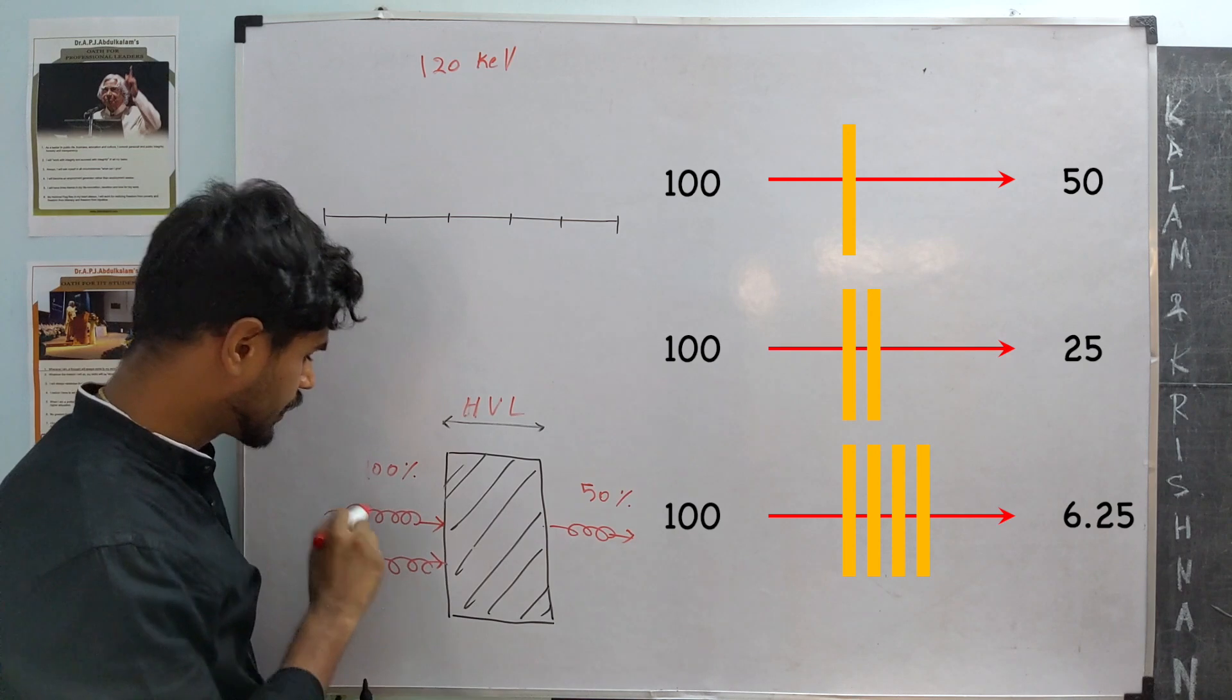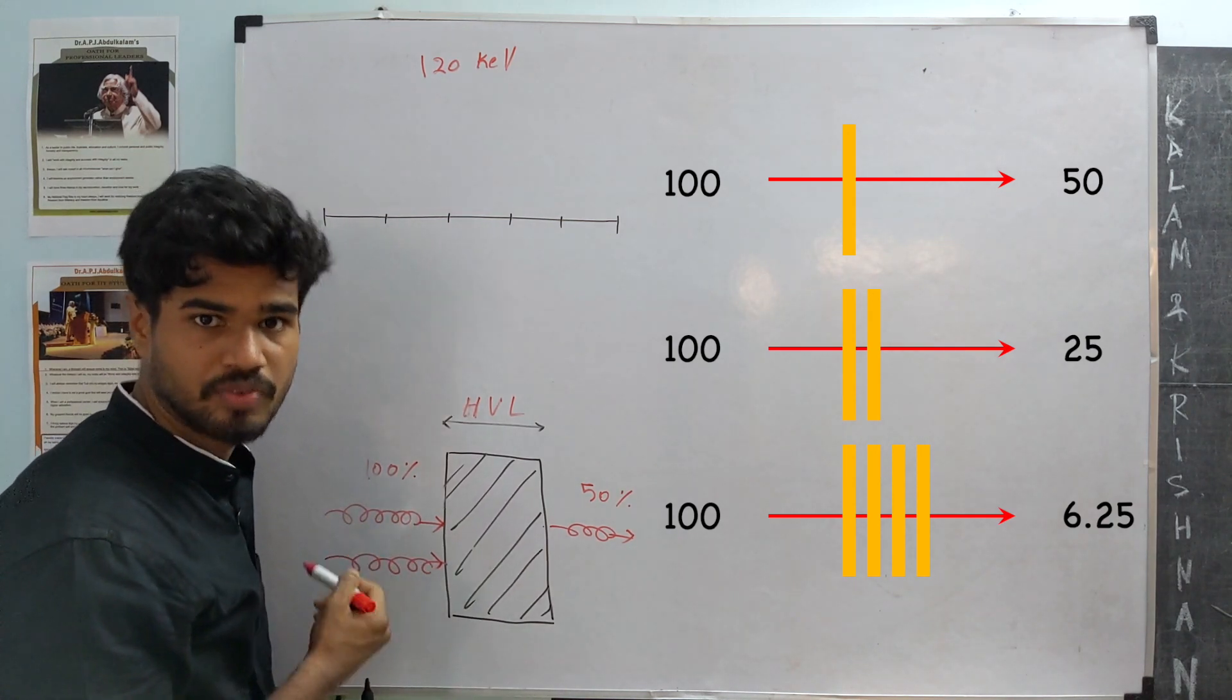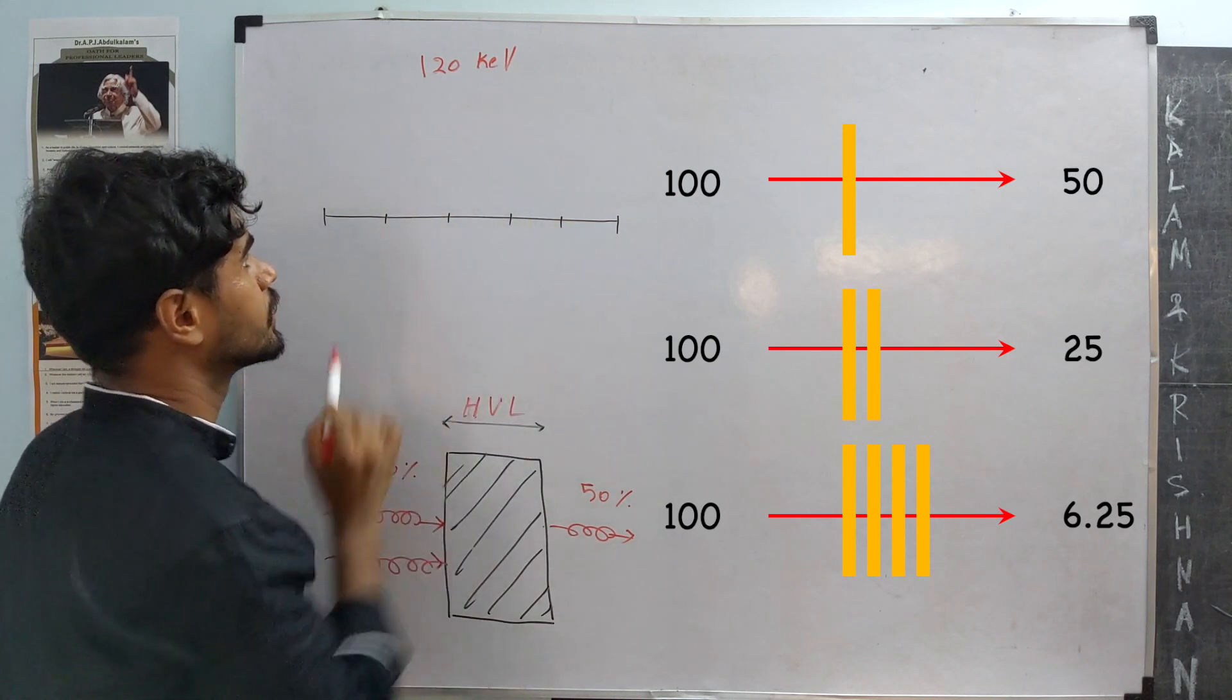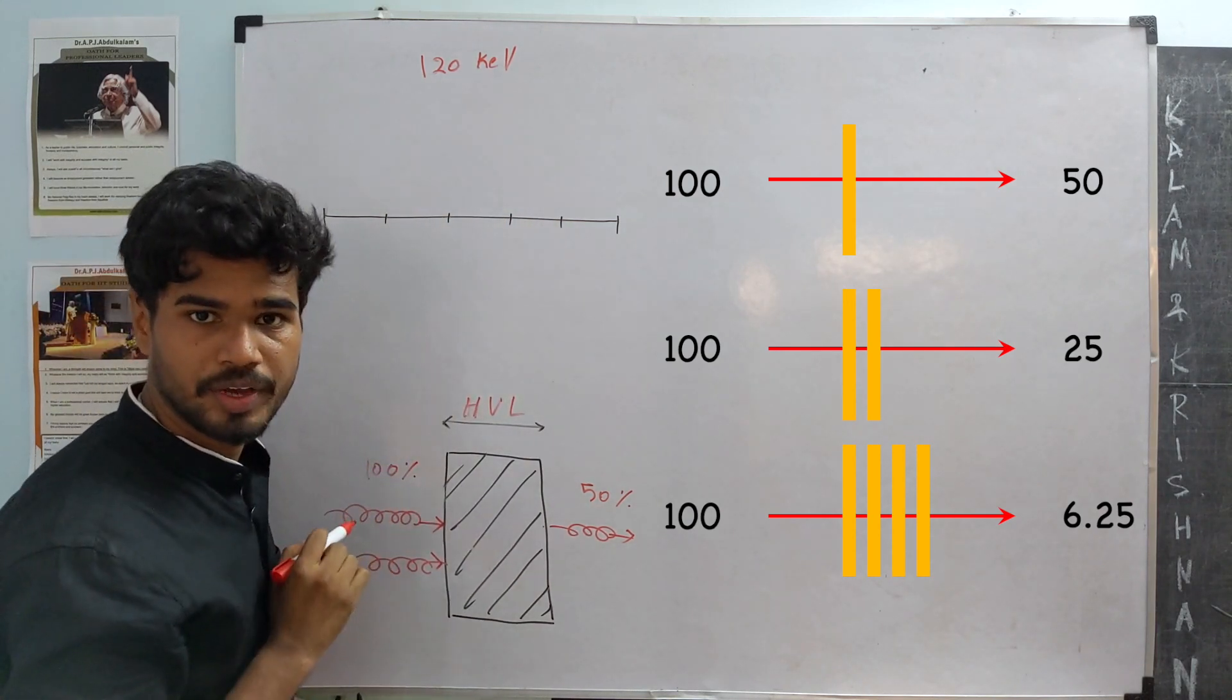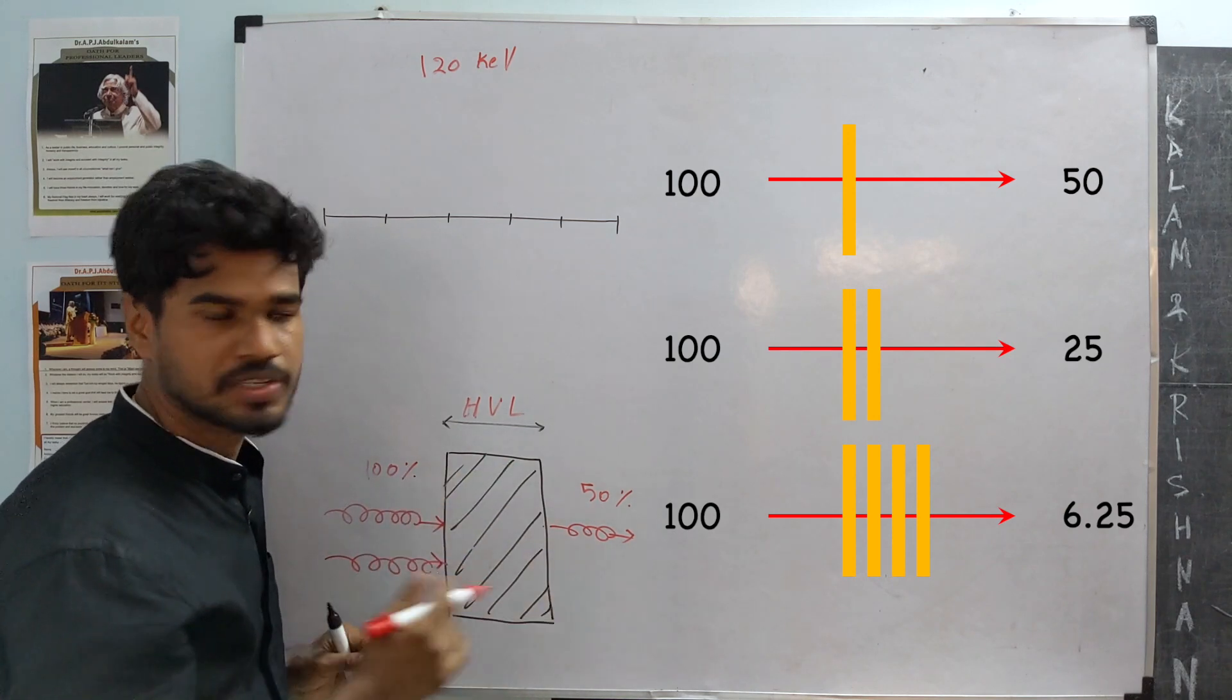That is, light or photons of the same energy or wavelength. Because of that, we are given they all have 120 kilo electron volt energy. Fine. So, HVL is applicable and we can proceed further.